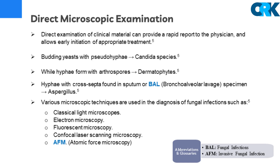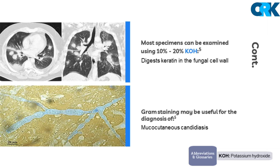Various microscopic techniques are used in the diagnosis of fungal infections, involving classical light microscopes and electron microscopy, as well as fluorescent microscopy, confocal laser scanning microscopy, or atomic force microscopy. Most specimens suspected of invasive fungal infections can be examined using 10% to 20% potassium hydroxide, which digests keratin in fungal cell walls. Gram staining may also be useful for the diagnosis of yeast infections such as mucocutaneous candidiasis.